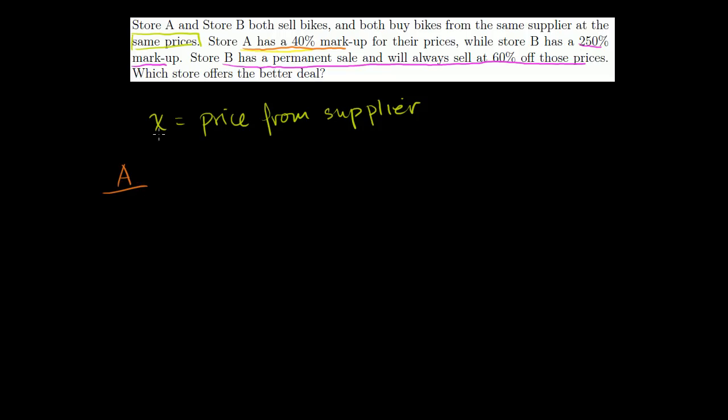That's the price that both bike stores buy their bicycles at. Now let's do the scenario of store A. What does store A sell their bike for? They sell the bike for x plus 40% of x, which equals 1.4 times x. That's how much store A sells their bike for. Now store B is a little bit more interesting. So they have a 250% markup. So they claim to sell their bike for x plus 250%. That's the same thing as 2.5 times x. 100% markup would literally mean another x. This is 250%. You can just divide by 100, you get 2.5. So they sell at x plus 2.5x, which equals 3.5x. That's kind of their ticket price.